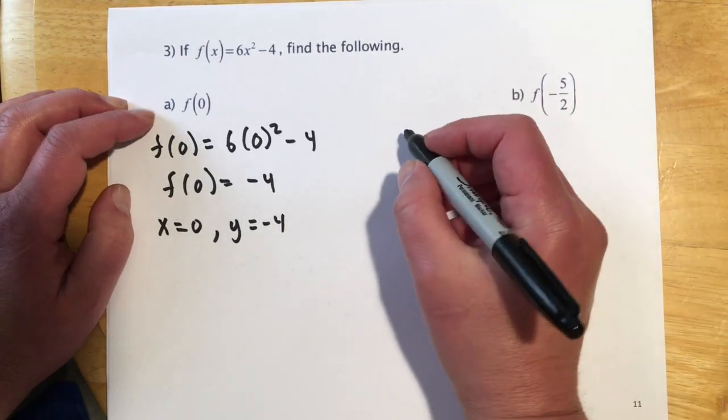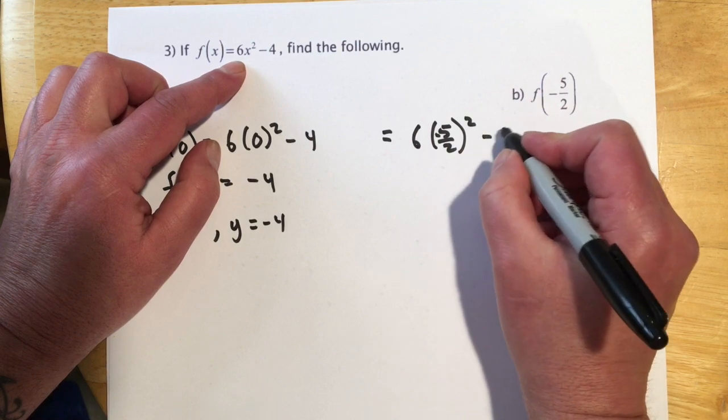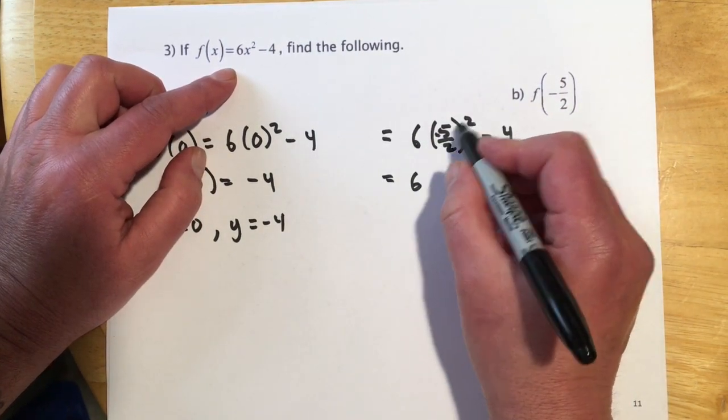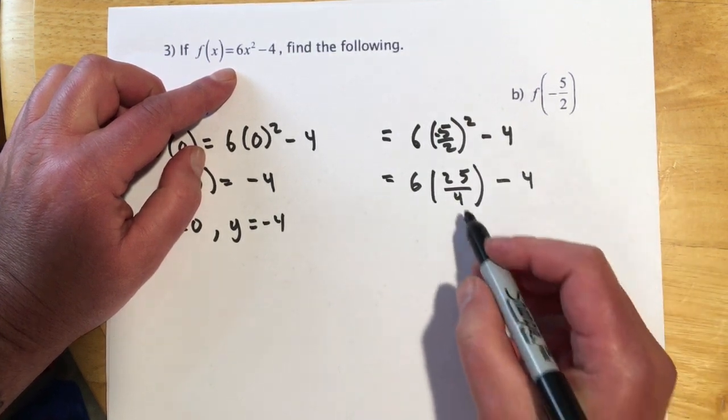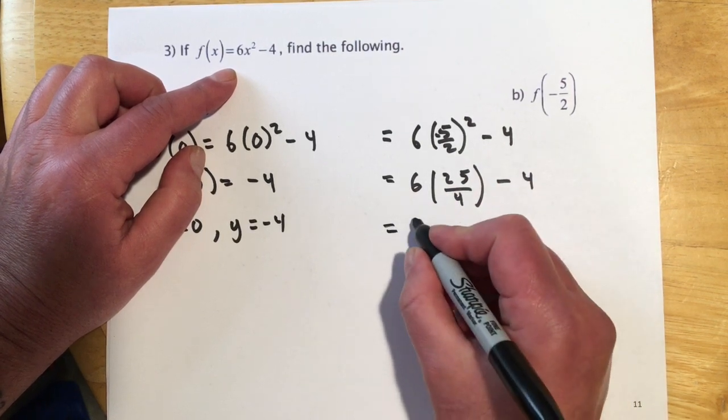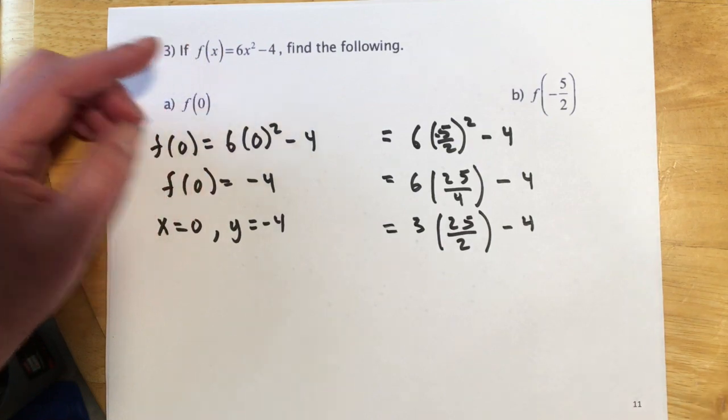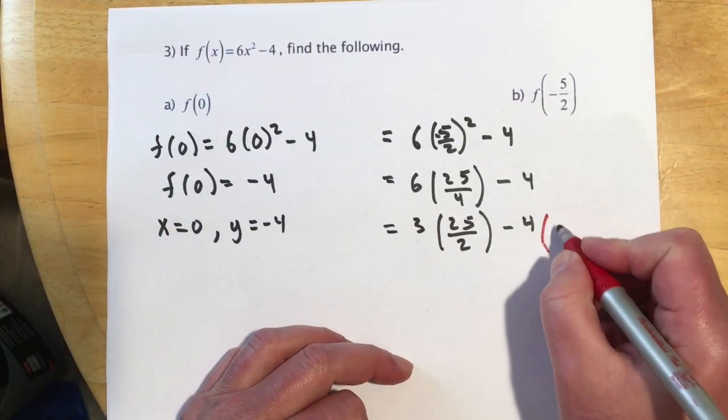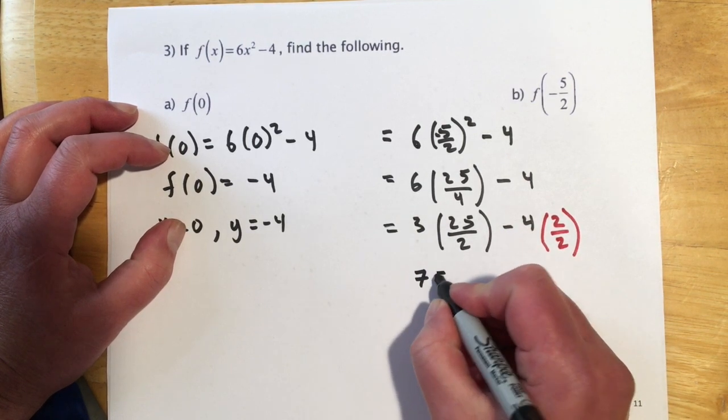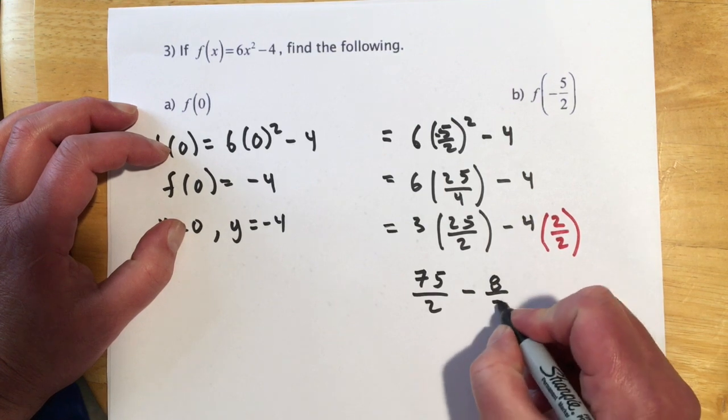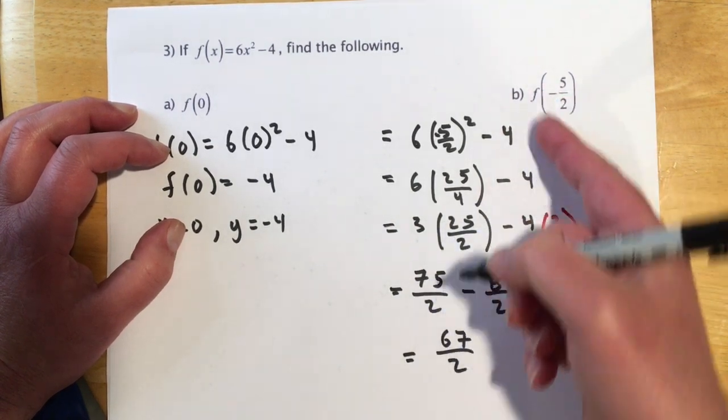Same thing, but with a fraction, which just makes the math a little worse. So this would equal 6 times negative 5 halves squared minus 4. So that would be 6, negative 5 times negative 5 would be 25, and 2 times 2 would be 4. And then here I can reduce that 6 and the 4 a little bit. So now it's 3 times 25 over 2, so I'm just knocking a 2 out of both, minus 4. And I think there, since I can see I'm about to have a denominator of 2 coming up, I'll get my common denominator going and do 2 halves. So 3 times 25 is 75 halves minus 4 times 2 would be 8 halves. And then 75 minus 8 is 67 halves. So that's what f of negative 5 halves would equal.